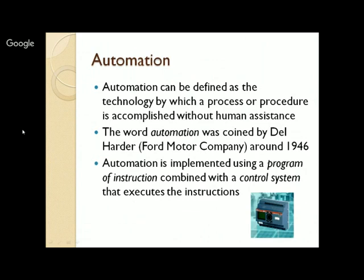Automation is doing something without or with minimal human assistance. It can be defined as the technology by which a process or procedure is accomplished without human assistance. The term automation was coined by Del Harder, who was working in Ford Motor Company in the year 1946.